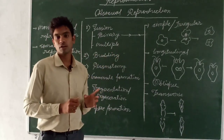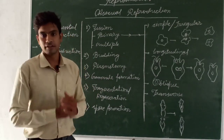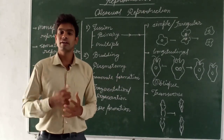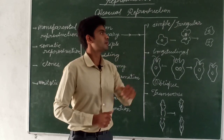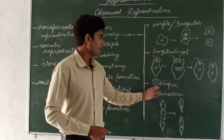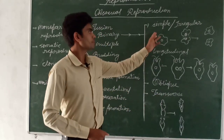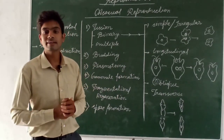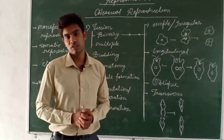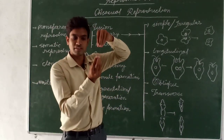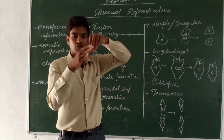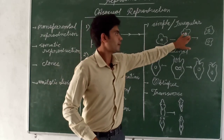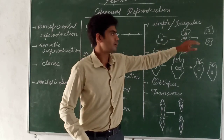Examples where binary fission occurs are amoeba, paramecium, euglena, and planaria. Based on the plane of division, binary fission is further divided into four types: simple or irregular binary fission, longitudinal binary fission, oblique binary fission, and transverse binary fission. In simple or irregular binary fission, division occurs at 90 degrees to the elongated or dividing nucleus — the best example is amoeba.